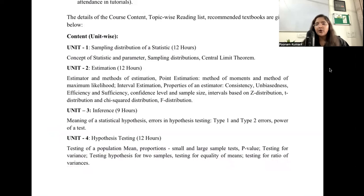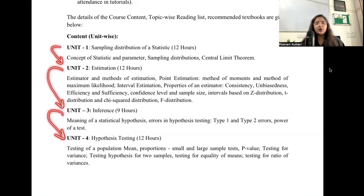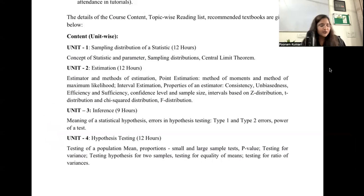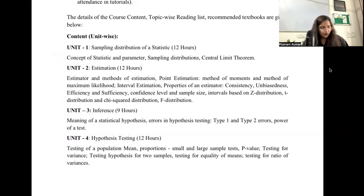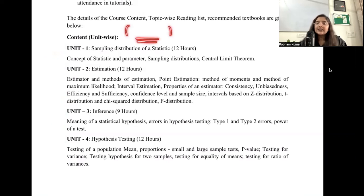Inference covers: what is the meaning of a hypothesis, what is an error, what is Type 1 and Type 2 error, what is the power of a test, and how do you test whether what you believe is actually correct. Unit 4 is a continuation — hypothesis testing related to different scenarios: differences in means, proportions, equality of means, and ratio of variances.